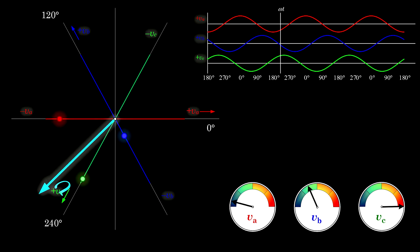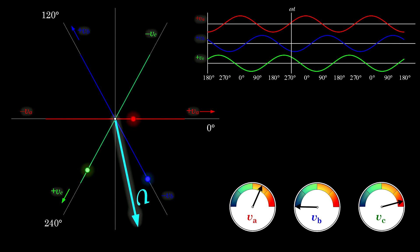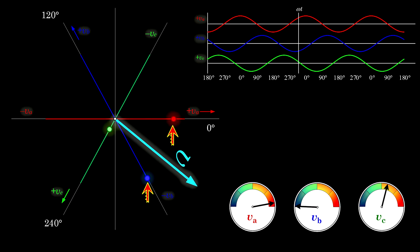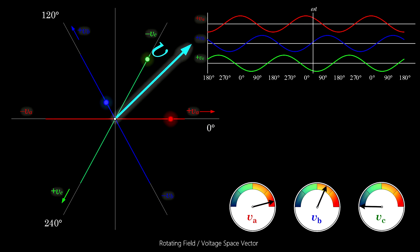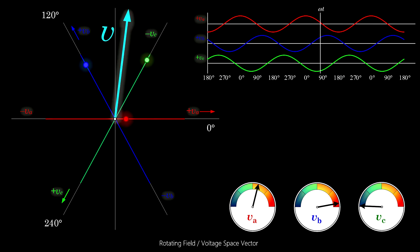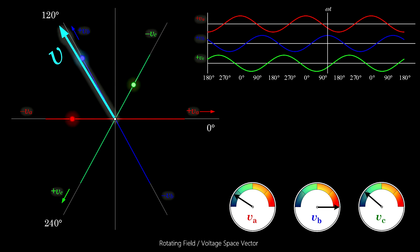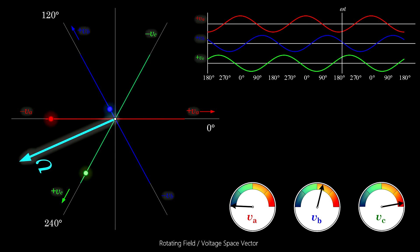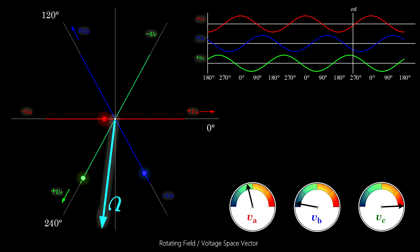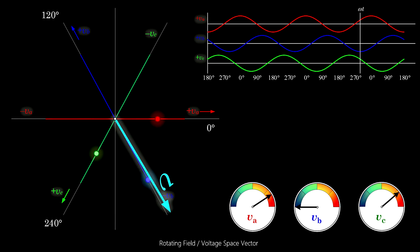So, the voltage vector is nothing more than the vector addition of the red, blue and green dot. Even though the three voltages incessantly change their value, the sum of them is a constant quantity. The constant voltage vector moves only through space, not through time.